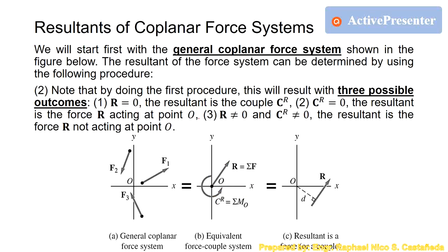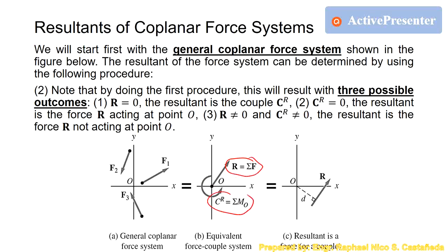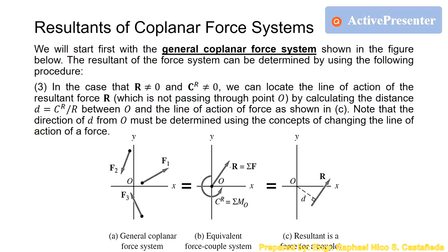This procedure results in three possible outcomes. First, if R is zero, the resultant is the couple C_R alone. Second, if C_R is zero, the resultant is force R acting at the origin. Third, if both R and C_R have values, the resultant is force R not acting at the origin — we locate its line of action by calculating distance D, where D equals C_R divided by R.